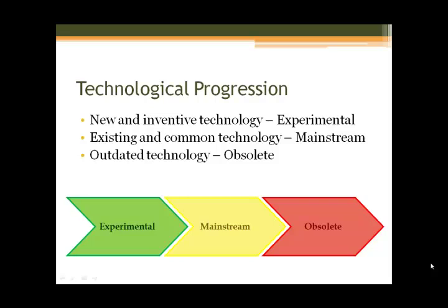Looking at the technological progression, new and inventive technology is what we would deem as experimental. As an example, when the floppy drive was first invented, it would be considered experimental. However, after the floppy drive was used quite frequently by most people and most businesses, it became existing and common technology, or what we would deem as mainstream.